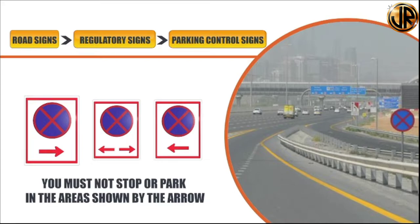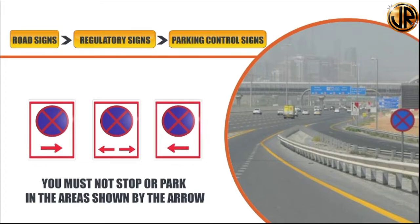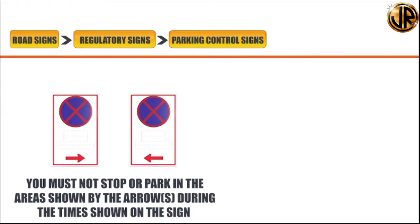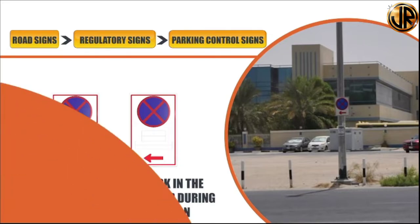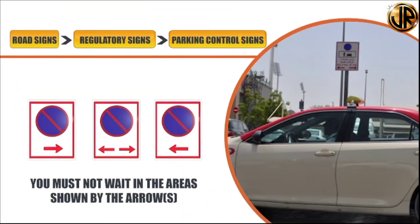No stopping signs indicate that you must not stop or park the vehicle in the area shown by arrows, even if you are sitting in the vehicle. These are commonly found at government offices, bend roads, lay-by parking, bridges, tunnels, tram areas, schools and petrol stations. Arrows indicate whether stopping or parking is not allowed to the right, to the left, or on both sides. The 'no stopping with timing' sign means stopping or parking is not allowed in the mentioned direction during the timings shown. The 'no waiting' sign illustrates that you cannot wait for an extended period — you can only stop to pick up and drop someone; these signs are found at shopping malls, parks, school areas, airport drop-off areas and designated parking.